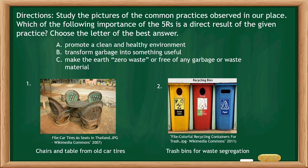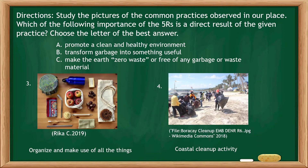Number 2: Trash bins for waste segregation. The answer is letter A — Promote a clean and healthy environment. Number 3: Organize and make use of all things. The answer is letter C — Make the earth zero waste or free of any garbage or waste material. Number 4: Coastal clean-up activity. The answer is letter A — Promote a clean and healthy environment.